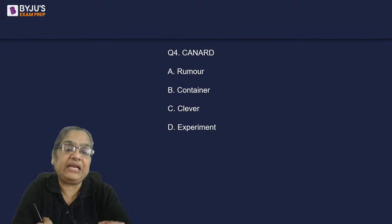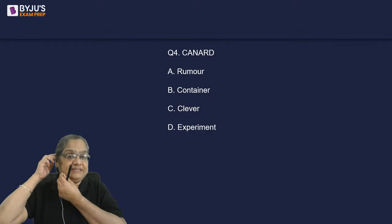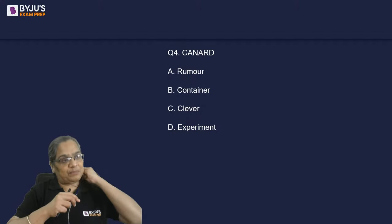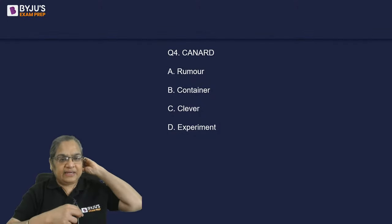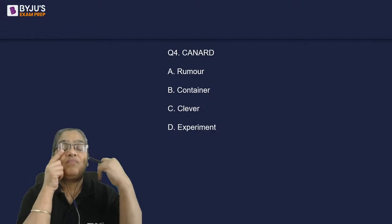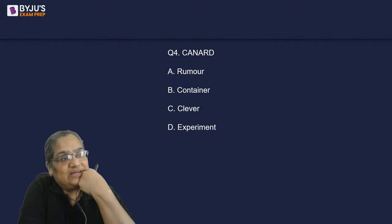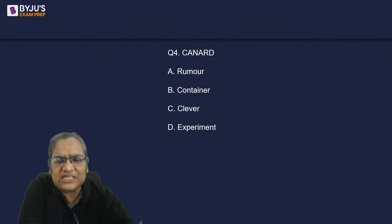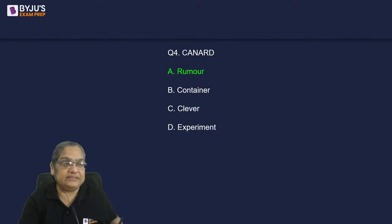Next: 'canard.' What is the meaning of canard? Is it: rumor, container, clever, or experiment? Whenever there is a story about anybody in the press, they first deny it saying the story is a canard — 'my opponents are just spreading these evil canards about me.' A canard means a rumor; a false story someone is spreading in your name.